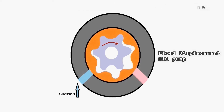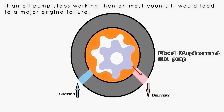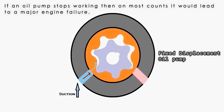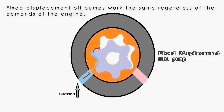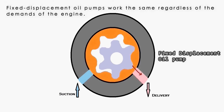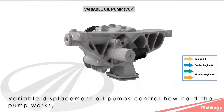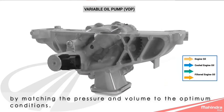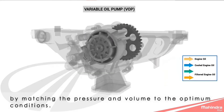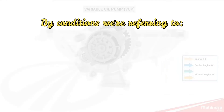The oil pump is a highly critical part of the engine. If an oil pump stops working, then in most cases it would lead to a major engine failure. Fixed displacement oil pumps work the same regardless of the demands of the engine. Variable displacement oil pumps control how hard the pump works by matching the pressure and volume to the optimum conditions.